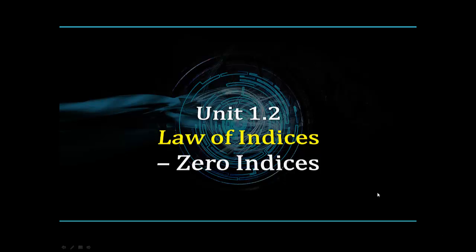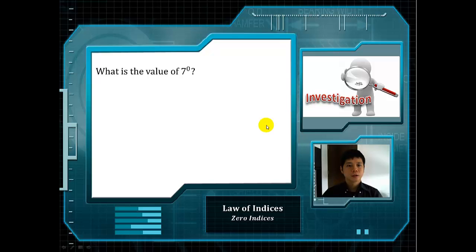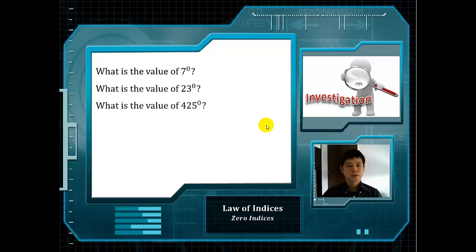The first part of today's lesson is about zero indices. Let's evaluate the value of 7 to the power of zero. You will need a calculator for this. What is the value of 23 to the power of zero? And what is the value of 425 to the power of zero?